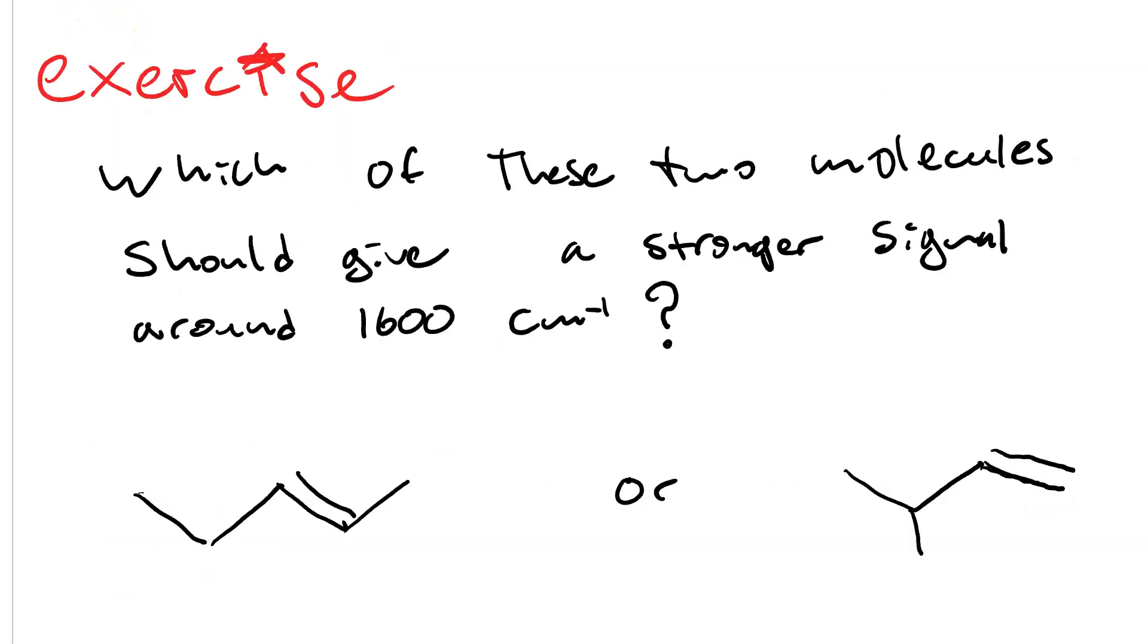Here's an exercise to try. Which of the two molecules shown below should give a stronger signal around 1600 wavenumbers? And our choices are 2-pentene or 3-methyl-1-butene. These two molecules have the exact same molecular weight.